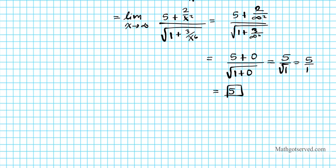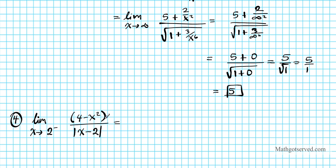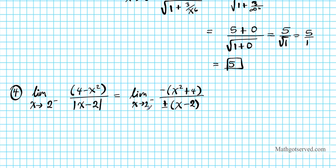Let's move on to question 4. We're going to look for the limit as x approaches 2 from the left side of 4 minus x², divided by the absolute value of x minus 2. Let's rewrite the numerator. Remember, if you see the order of the difference reversed, you have to add a minus sign. I'm going to put a minus to the front, so it becomes negative (x² minus 4), divided by the absolute value, which is plus or minus (x minus 2). Since we're pushing 2 from the left side, we drop the plus component and use negative (x minus 2).